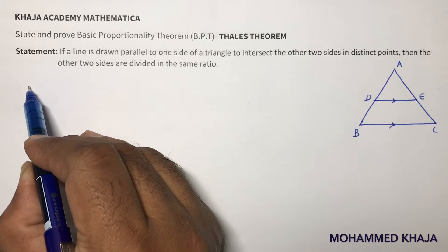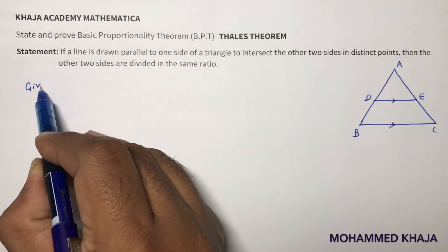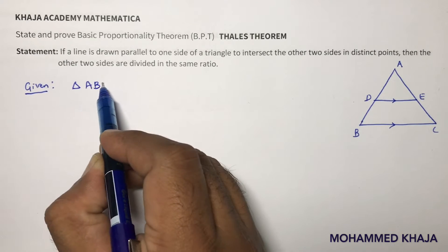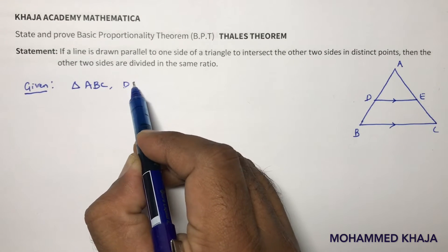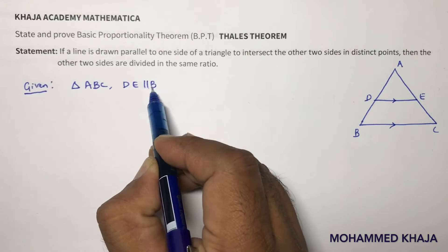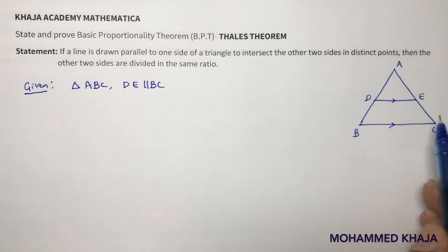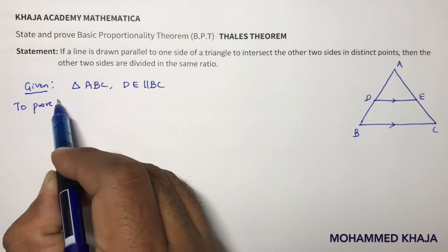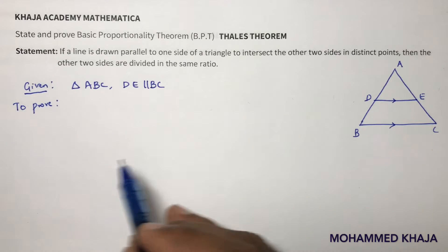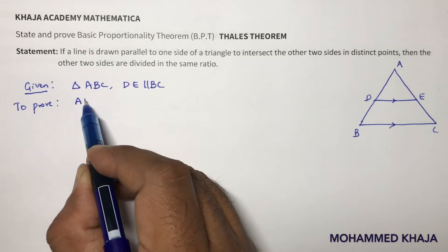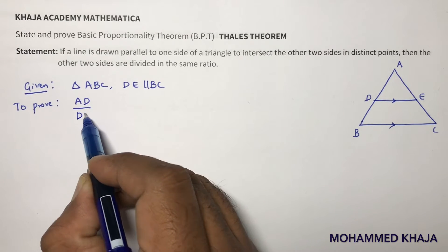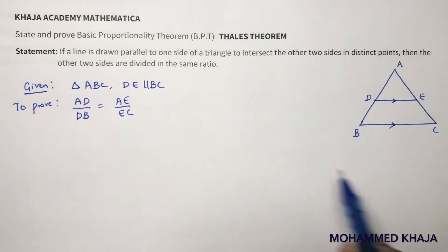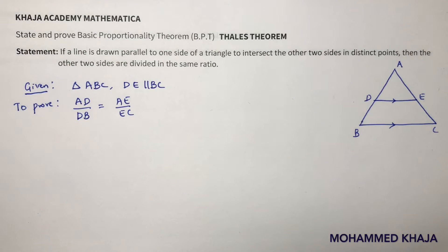Given: triangle ABC and DE is parallel to BC. We need to prove that DE divides AB and AC in the same ratio, that is, AD/DB = AE/EC.